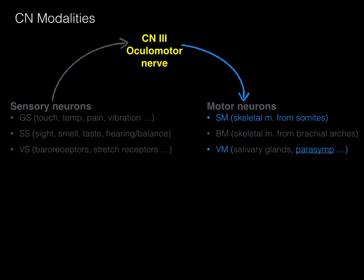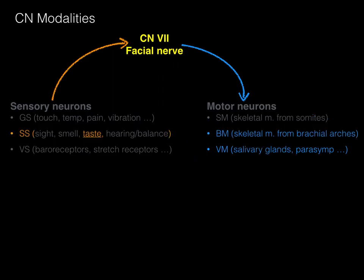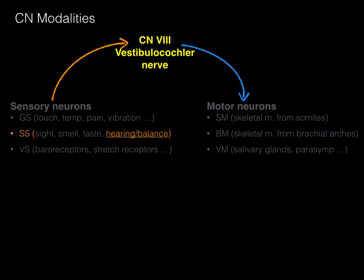Let's do some examples. The oculomotor nerve, cranial nerve number 3, has two types of motor neurons: somatic motor to eye muscles, and visceral motor — parasympathetic — to the pupillary sphincter muscles that constrict your pupil. The facial nerve carries special sensation for taste and branchial motor to the skeletal muscles of facial expression, plus visceral motor to the salivary glands and lacrimal gland. The vestibulocochlear nerve only carries special sensation for hearing and balance.